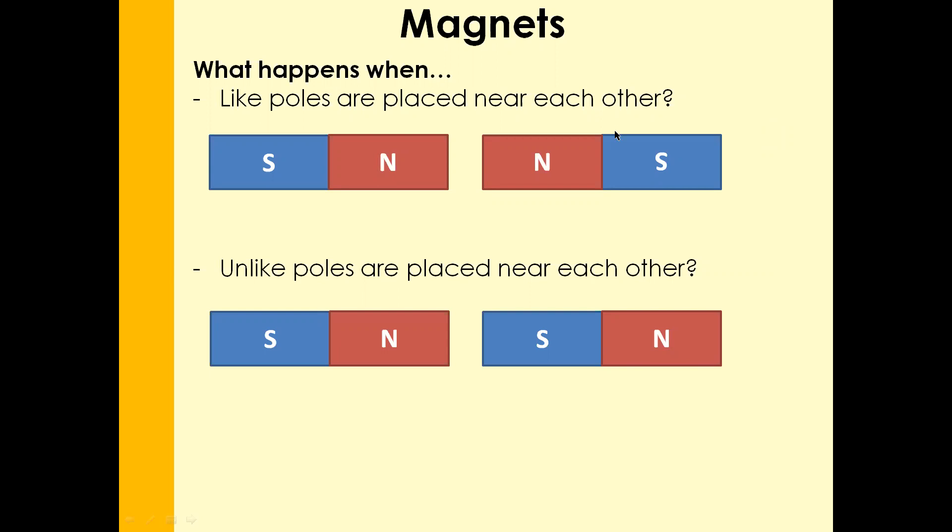So here's a quick starter for us. What happens when like poles are placed near each other? And unlike poles are placed near each other. Pause the video. Give it a go.